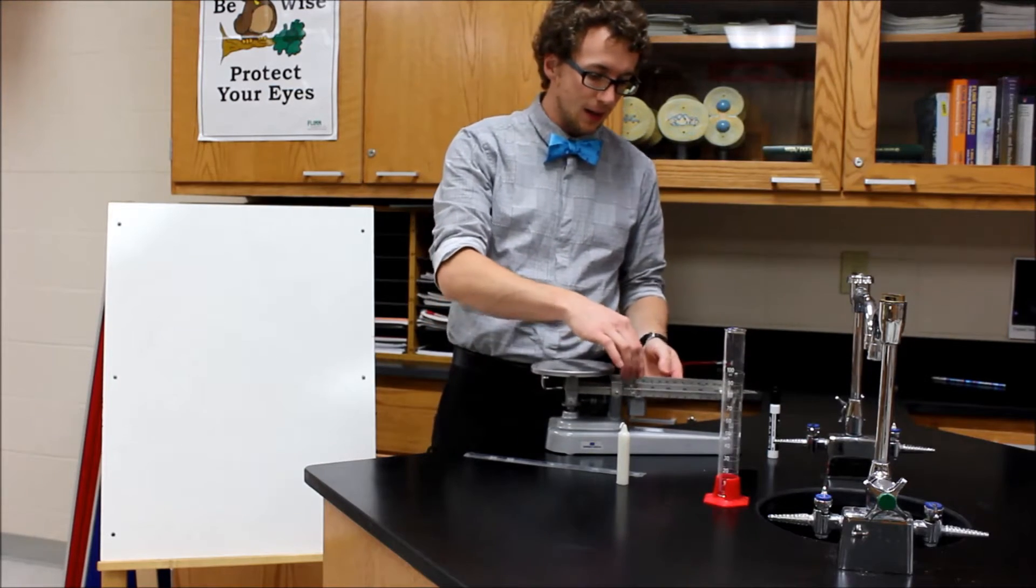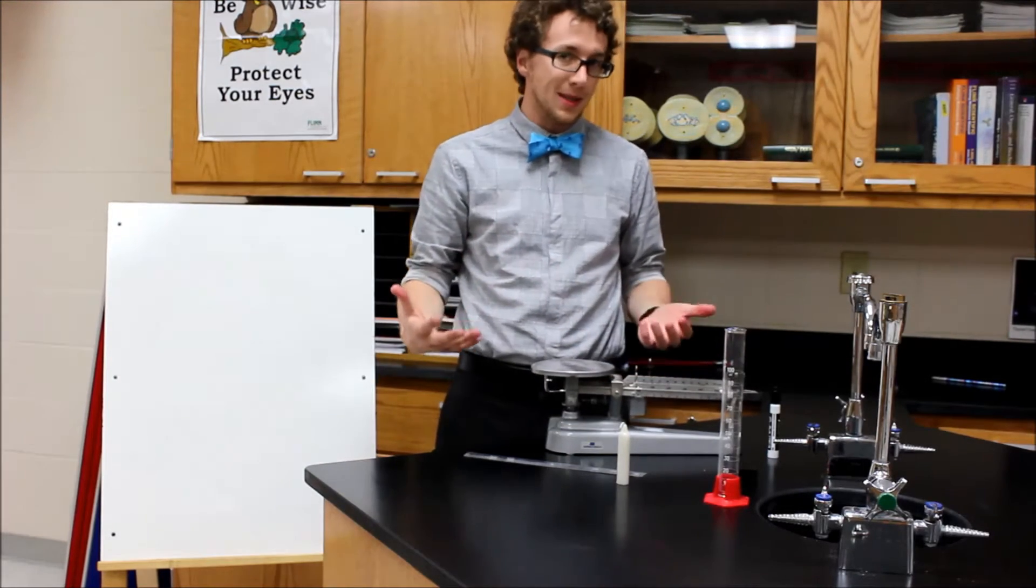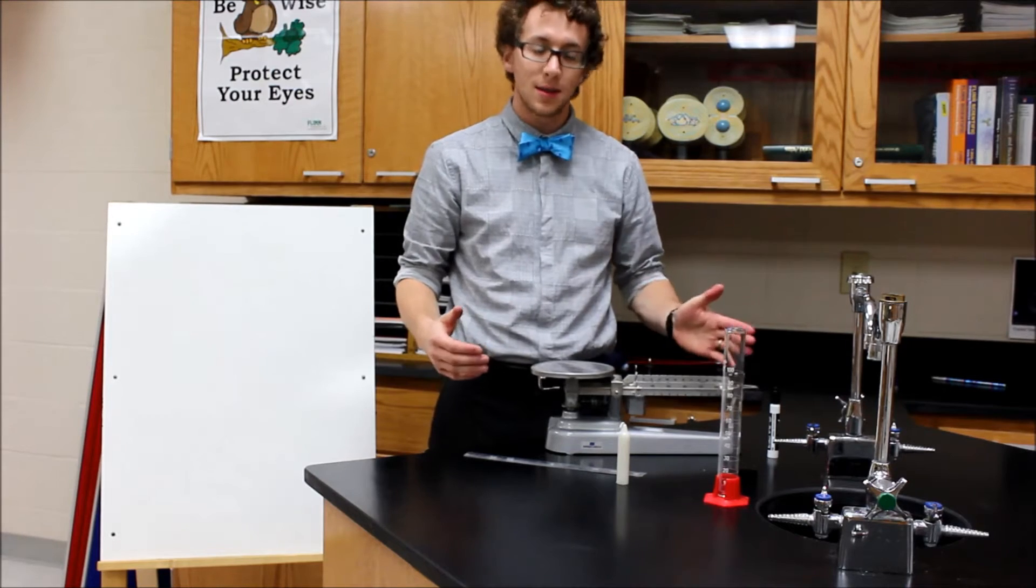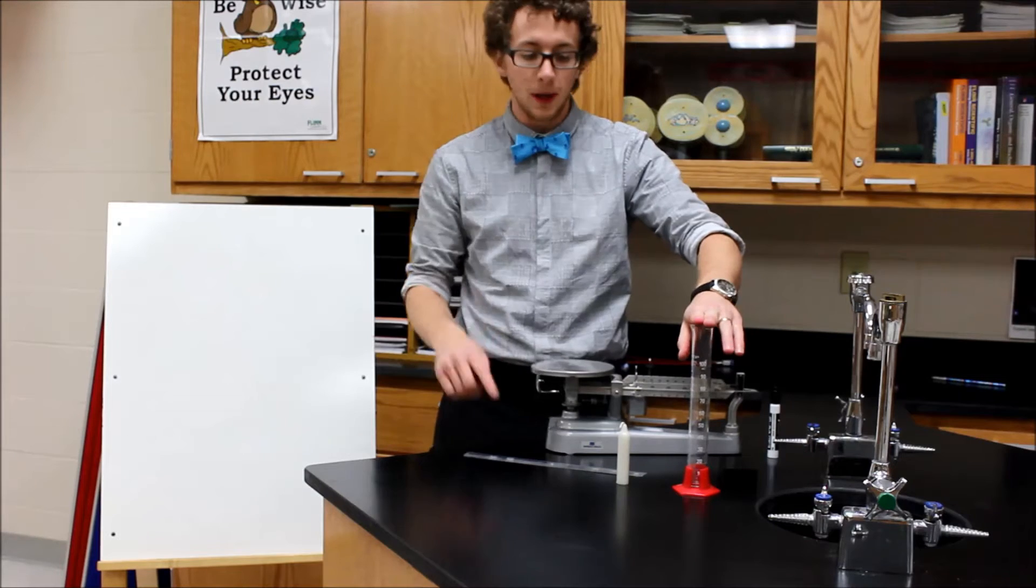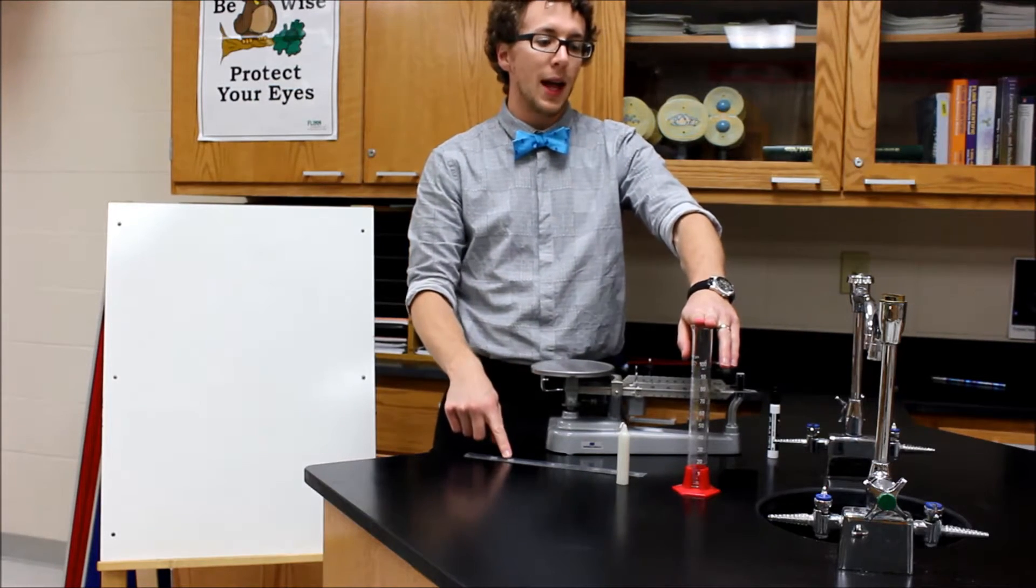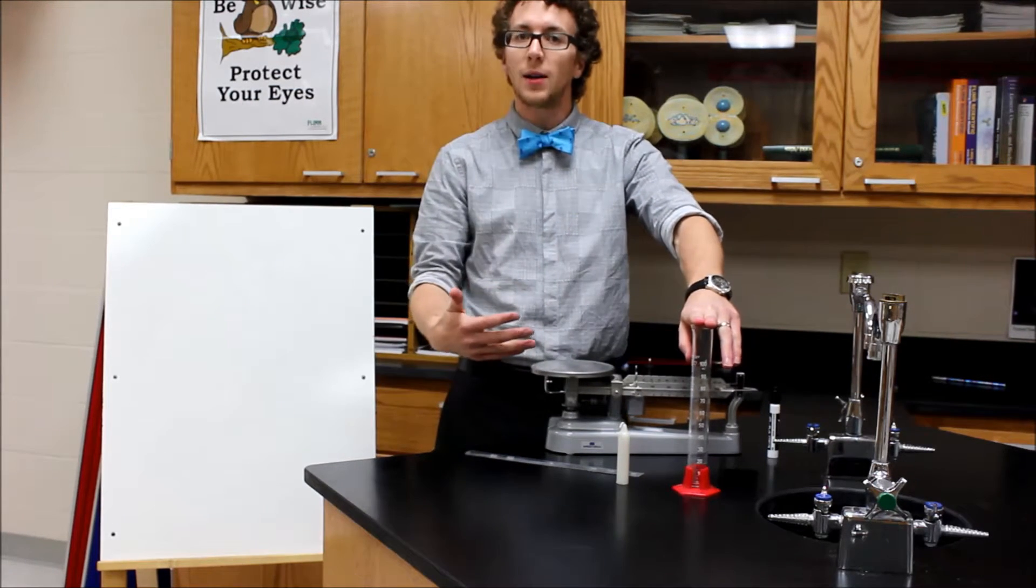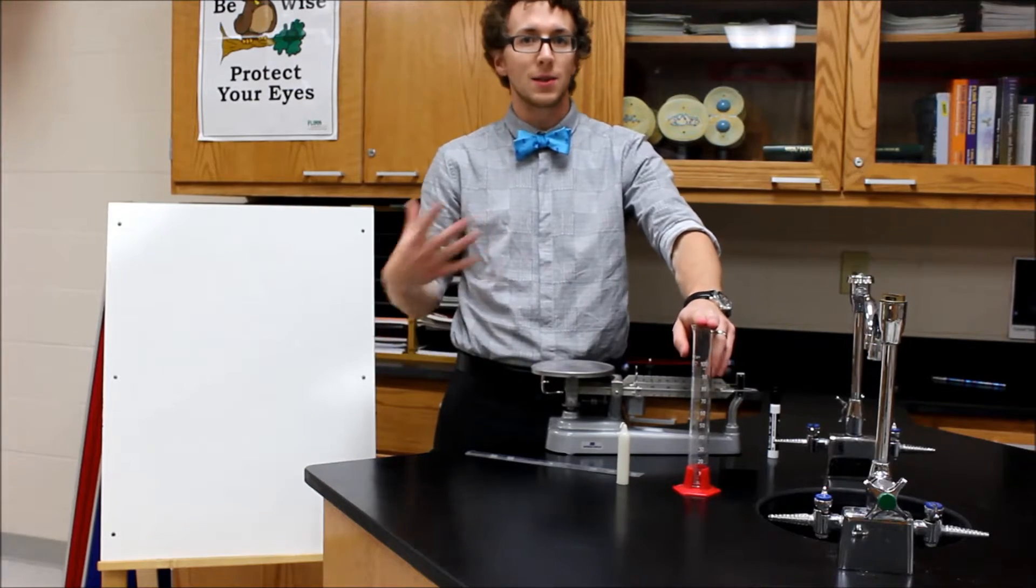So we're going to take the mass of something using a triple beam balance. I'm going to measure the volume of something two different ways and then we're going to use those two values to calculate density. That's what we're doing in this video.